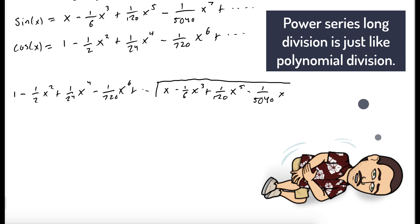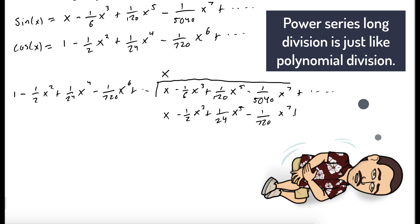For the first term, how many times does one go into x? It goes in x many times. We take x and multiply it to each term in our Maclaurin series for cosine, then subtract the second row from the top row.